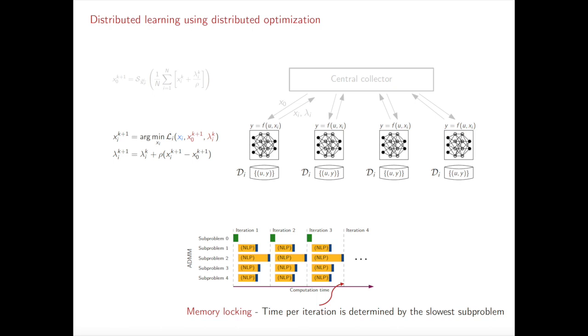ADMM requires the sub-problems and the master problem to be solved iteratively until some stopping criteria is met. In other words, every time a local node receives updated information from the central node, it has to resolve its potentially non-convex, non-linear optimization problem, whose difficulty increases with the size of the problem. Repeatedly solving the sub-problems can quickly add to the overall computation time.